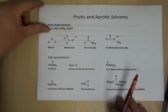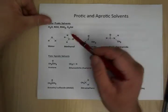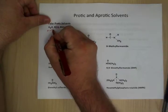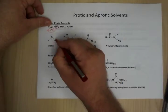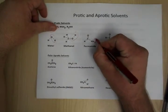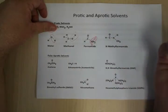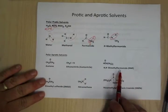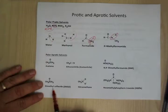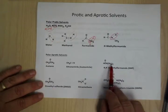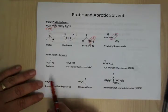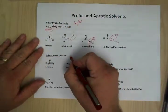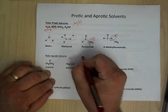Here are some examples. Water is the classic polar protic solvent. Alcohols are protic because they have an OH. Molecules with NH bonds are also protic. Acetone, acetonitrile, dimethylformamide, and DMSO are all classic aprotic solvents because all of their hydrogens are on carbons. The protic solvents are good for SN1 and E1, while aprotic solvents are good for SN2 and E2.